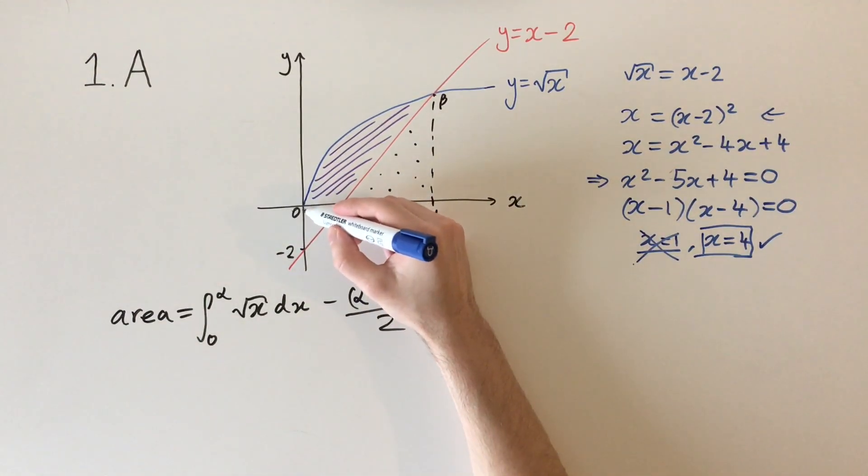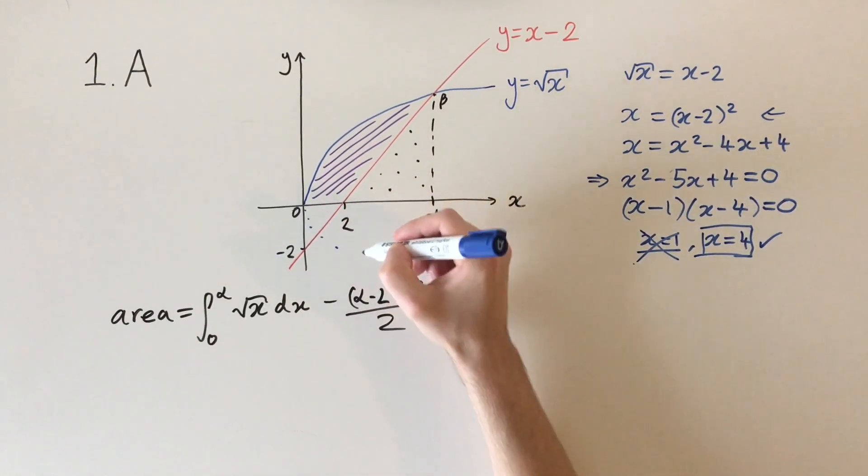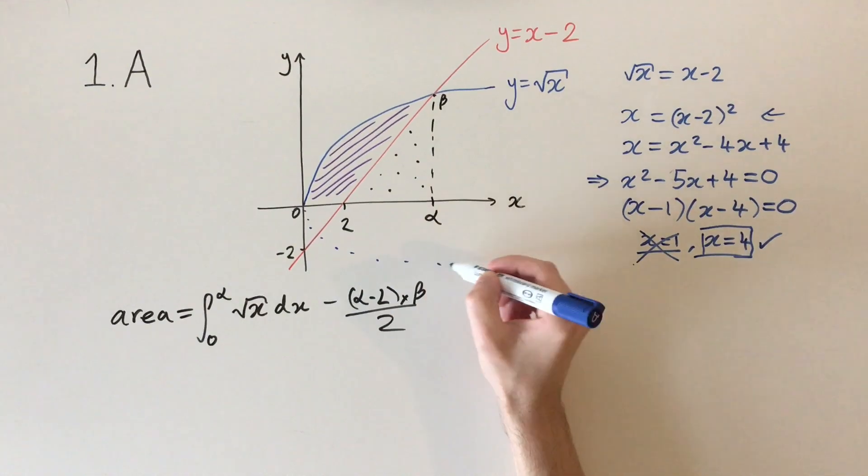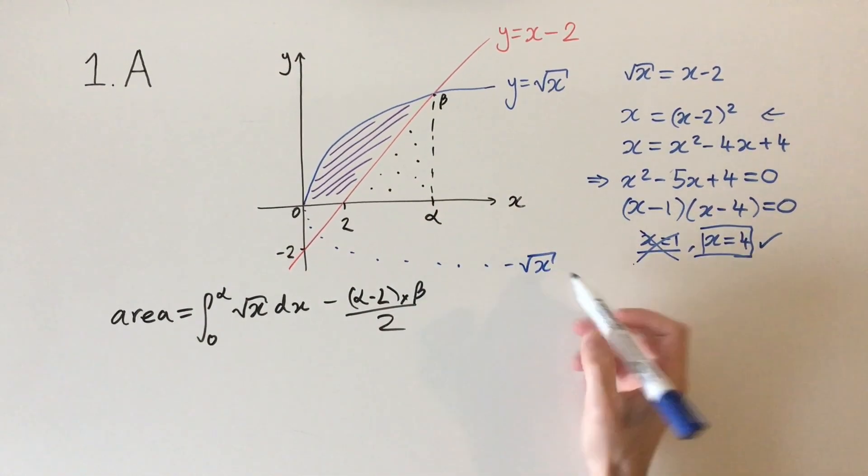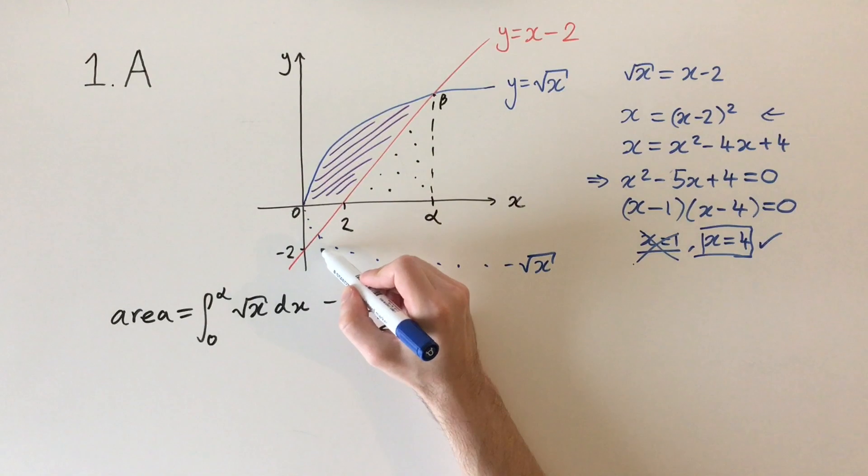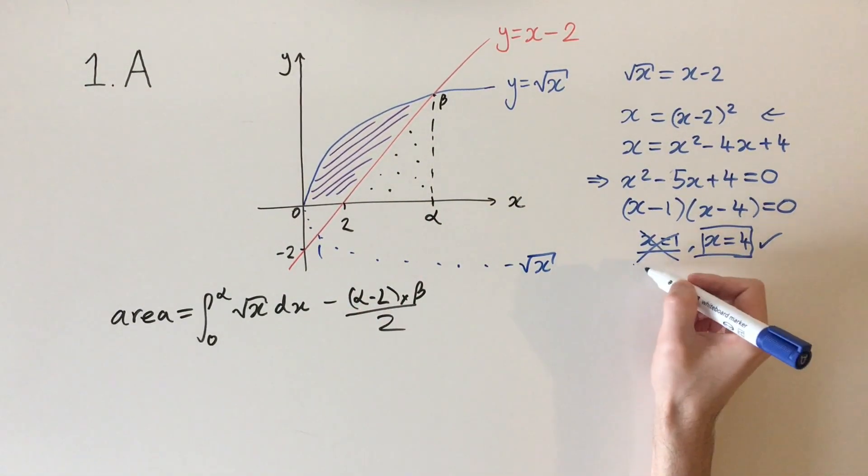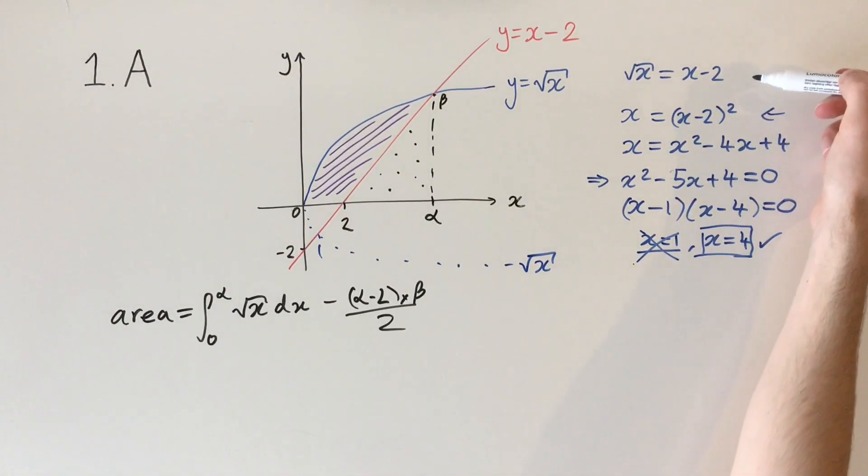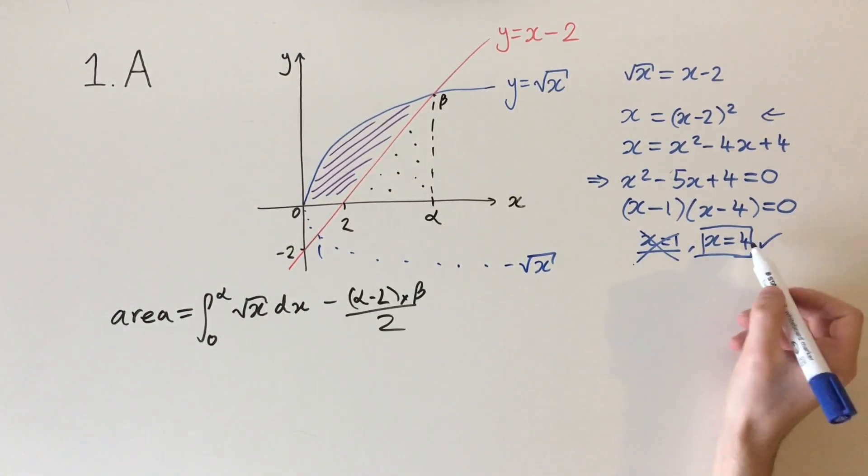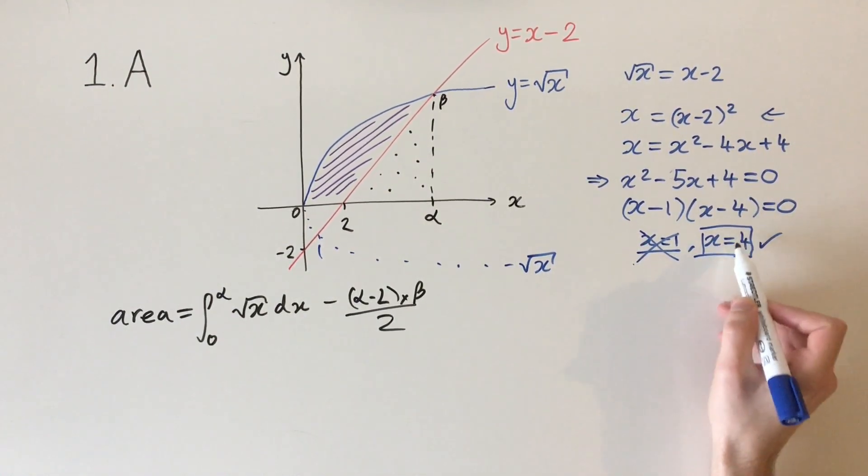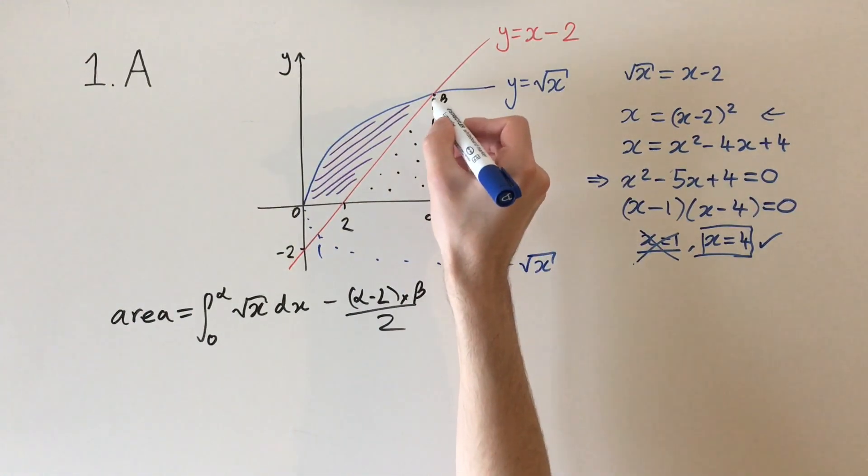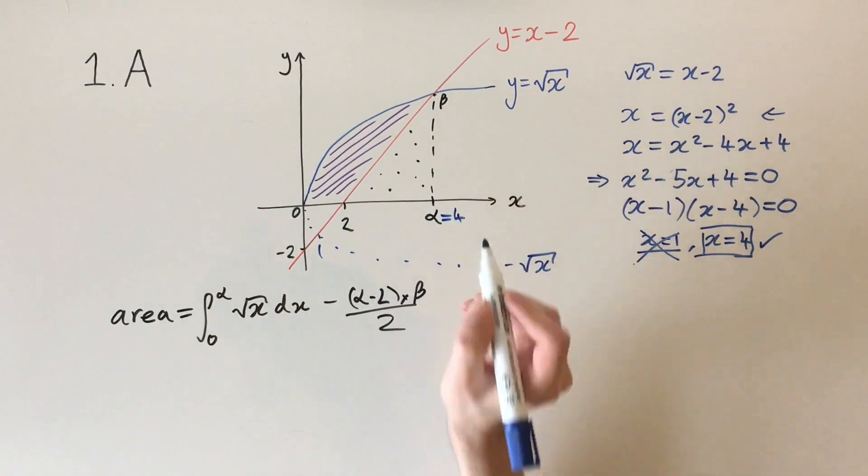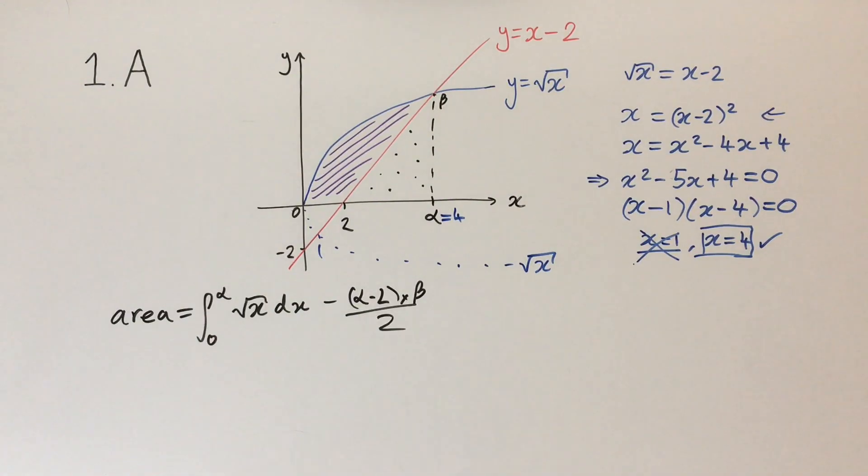If we had minus the square root of x, that would correspond to this point equaling 1. So this is where we've introduced this point, and this is something you need to be careful of. If you square both sides, you might introduce a solution, so you just check by inputting the values. Now we know that this point x equals 4 is the real intersection point, so alpha equals 4.